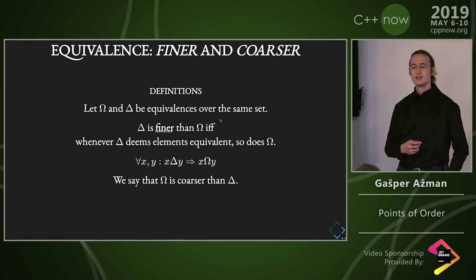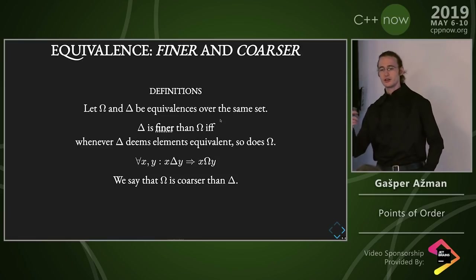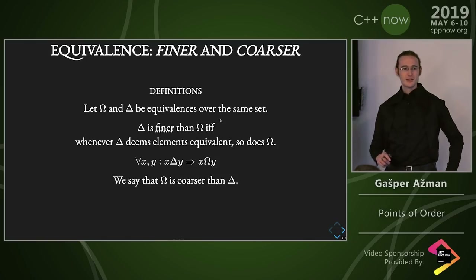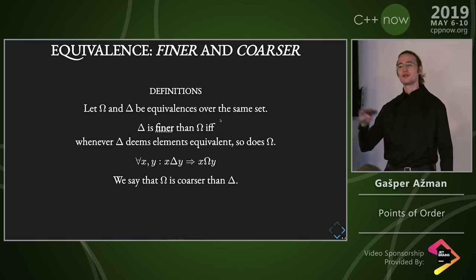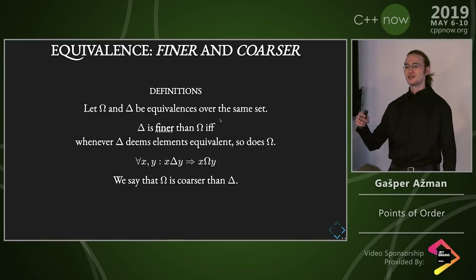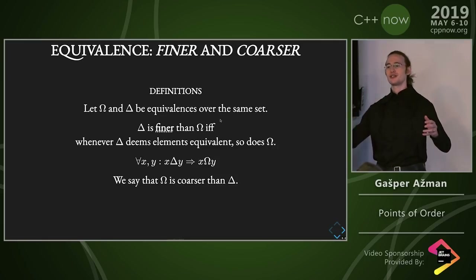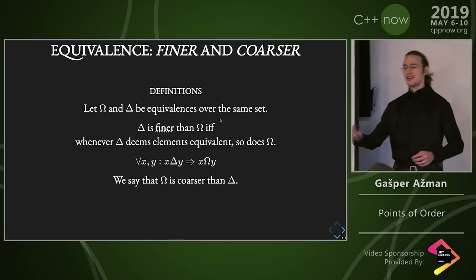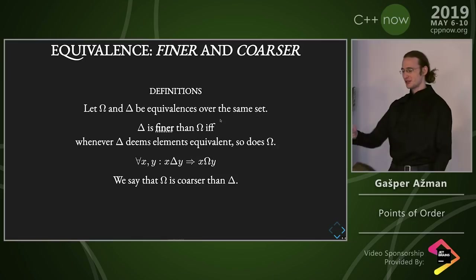[David: So every equivalence is finer than itself?] Yes, that is correct. It's like a less-than-or-equal operation on the lattice. Not strictly finer. But yes, that is correct. And in fact, the equality over equivalences is defined as: X is finer than Y and the other way around too. And that's the equality over equivalences. And equivalences form a lattice — that's really nice — but we're not going to get to lattices because I have 58 minutes left.